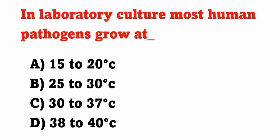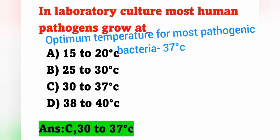First question: in laboratory culture, most human pathogens grow at — option A: 15 to 20 degrees Celsius, option B: 25 to 30 degrees Celsius, option C: 30 to 37 degrees Celsius, option D: 38 to 40 degrees Celsius. The answer is option C, 30 to 37 degrees Celsius.